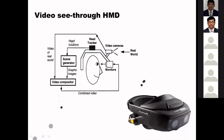In video see-through HMD, the setup is similar to optical see-through, but the key difference is that if any delay occurs between the real view and virtual view, it can be matched. Video of the real world is captured by cameras, a scene is generated with graphic images, and a video compositor combines both worlds. The combined video is then displayed to the user through monitors.